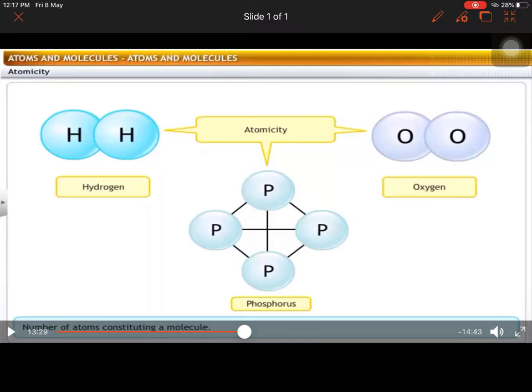If I say, what is the atomicity of oxygen gas? You will say two atoms. Two atoms of oxygen. You can see here, two atoms of oxygen. What is the atomicity of hydrogen gas? Two hydrogen atoms. What is the atomicity of phosphorus? Phosphorus is existing here in P4 state. Means P4 molecule. So it means four atomicity of the phosphorus.